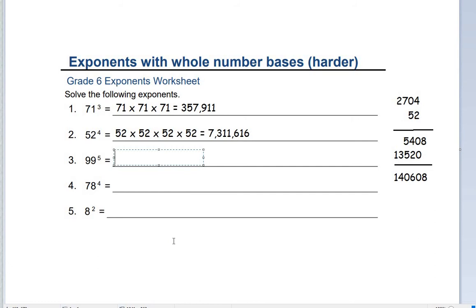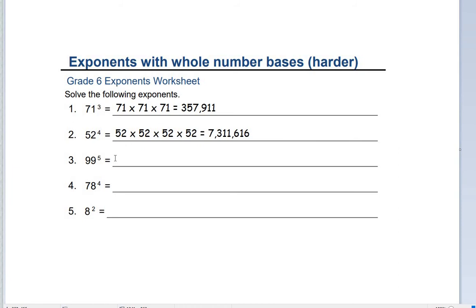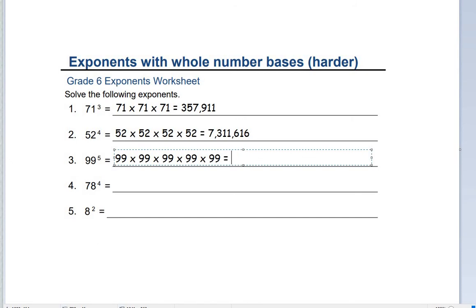Number 3: 99 times 99 times 99 times 99 times 99 — this is 99 to the power of 5. 99 times 99 would be 9,801. Then for the cube, the answer is 970,299.